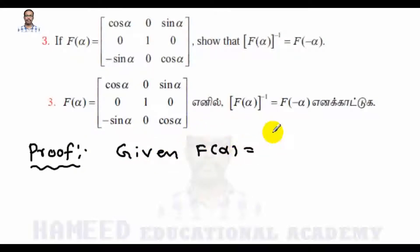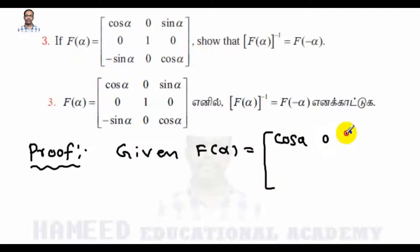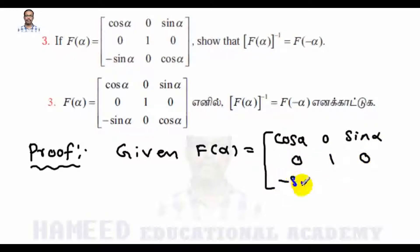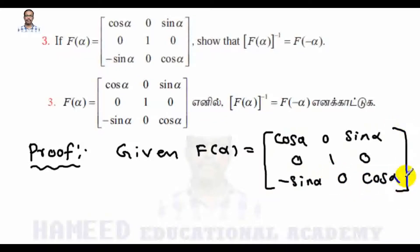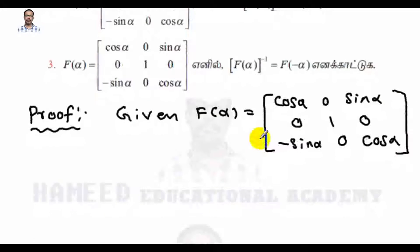Proof. Given f(α) is equal to [cos α, 0, sin α; 0, 1, 0; -sin α, 0, cos α]. Next we are going to find the left-hand side.